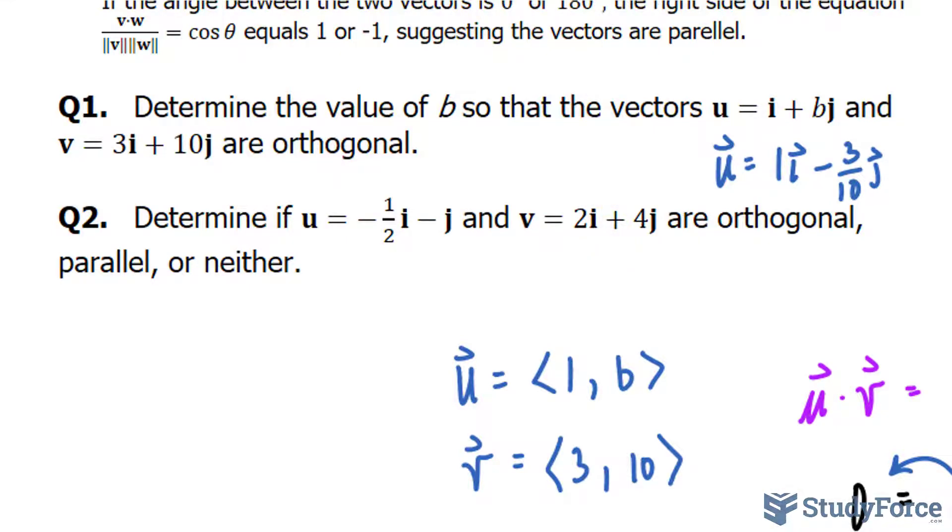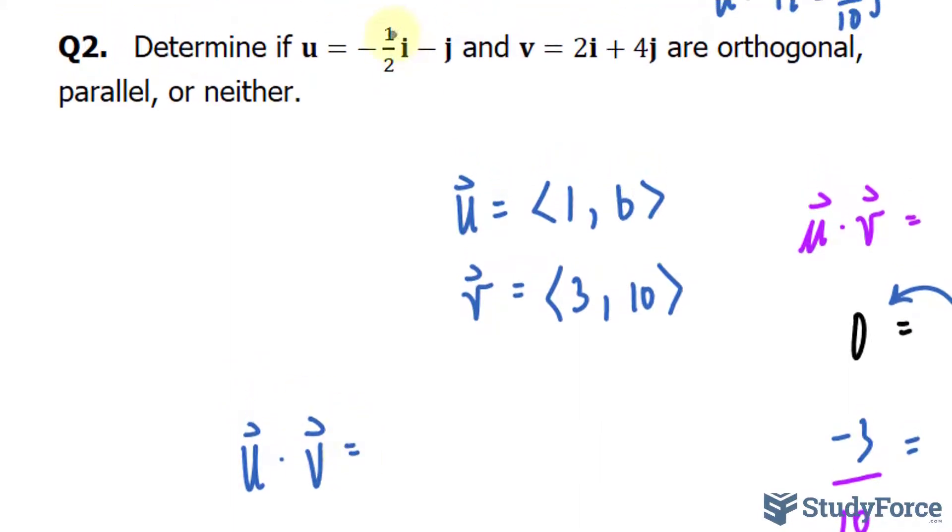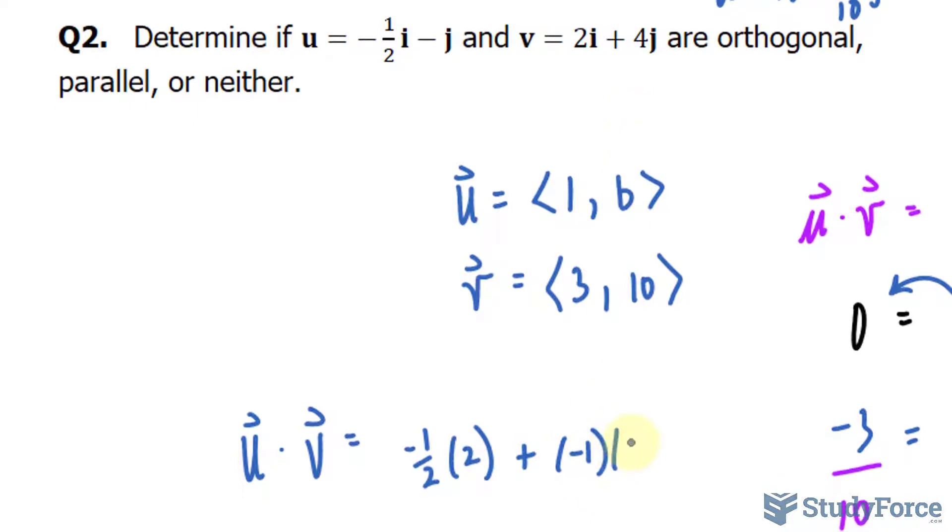Let's test to see if they are orthogonal. I'll take the dot product of both. So the dot product of U times V, we have the X components as negative half times 2, plus the Y components of negative 1 times 4.